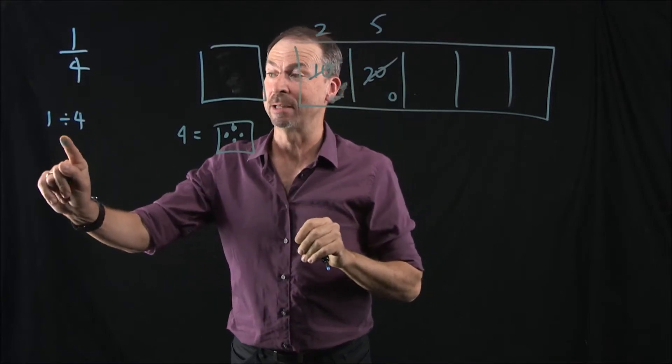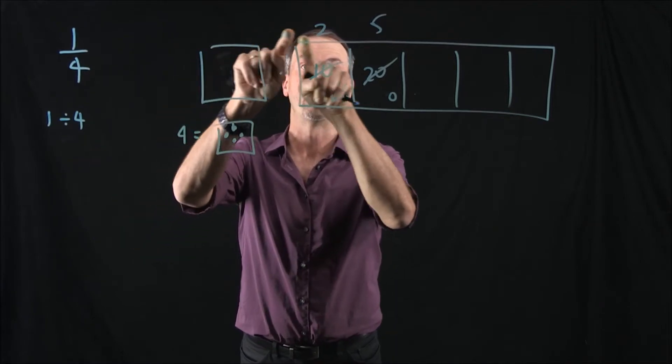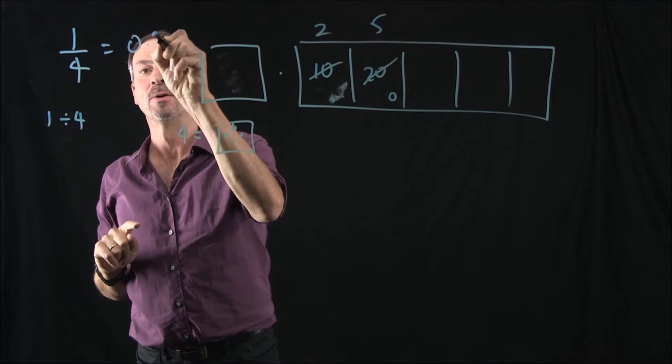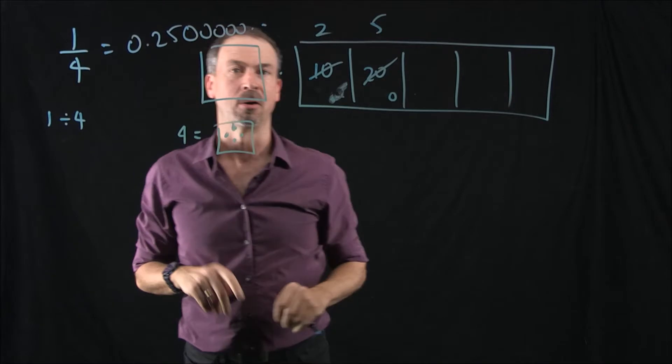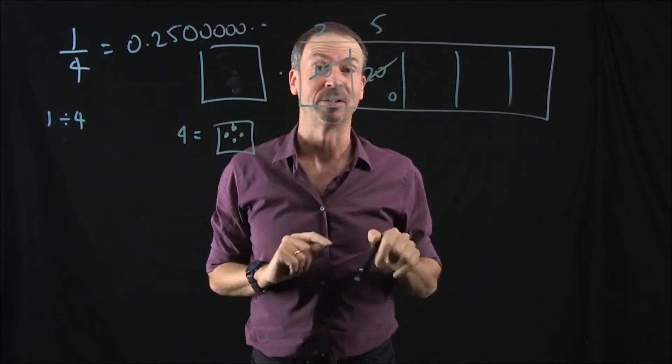So actually, when I do conduct this division problem, 1 divided by 4, I see I get the answer 0.25 and then nothing after. So actually, the answer is 0.25. Now, most people don't bother writing the extra zeros, because there's a whole lot of them, infinitely many of them.